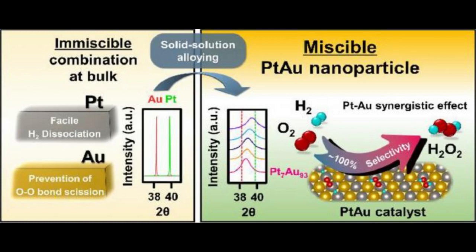Hydrogen peroxide can be produced anywhere, without large equipment, by simply injecting both hydrogen gas and oxygen gas into an aqueous solution using the developed catalyst. Unlike the palladium catalyst, the platinum-gold catalyst can produce hydrogen peroxide at up to 95 percent selectivity even at ambient temperature and atmospheric pressure.